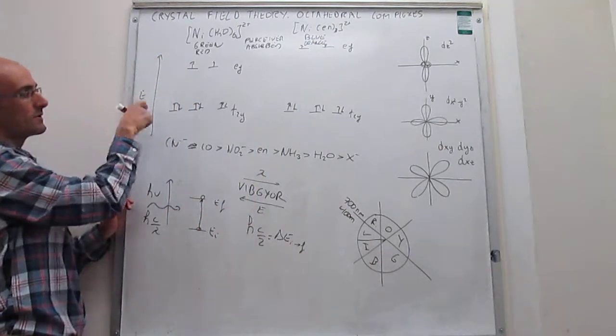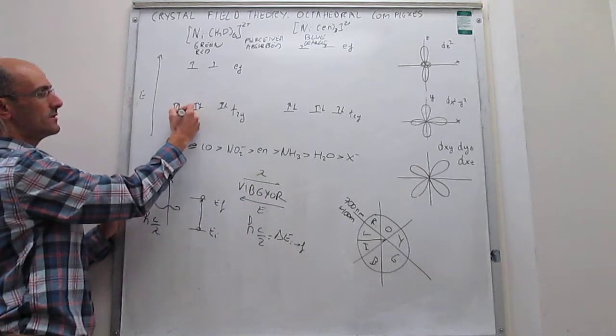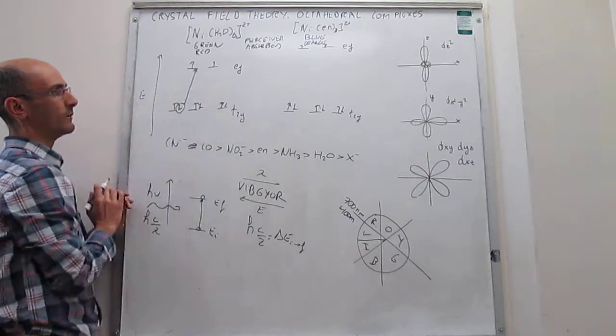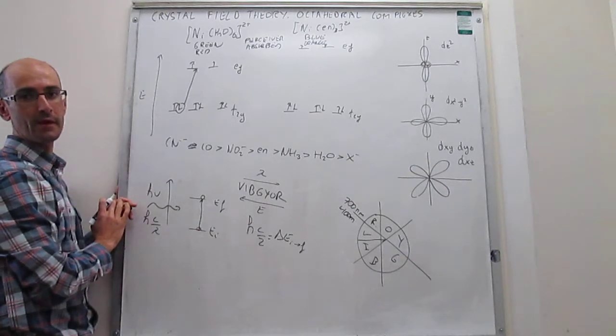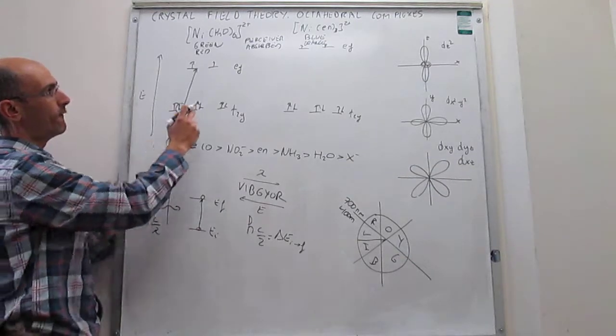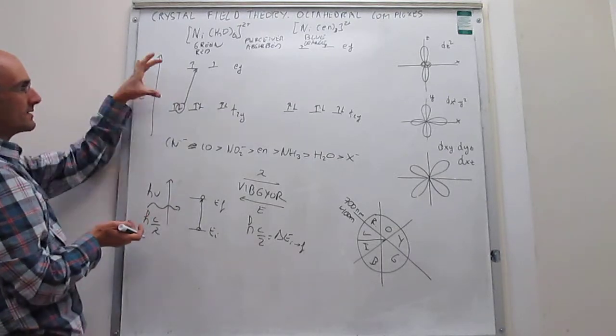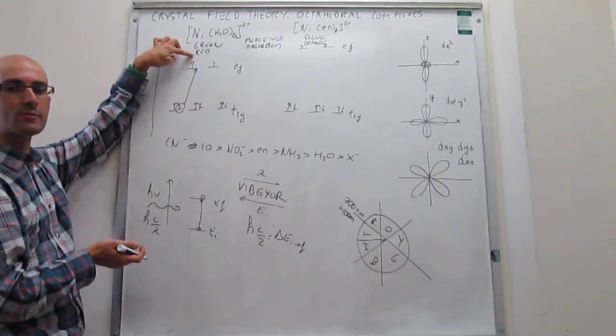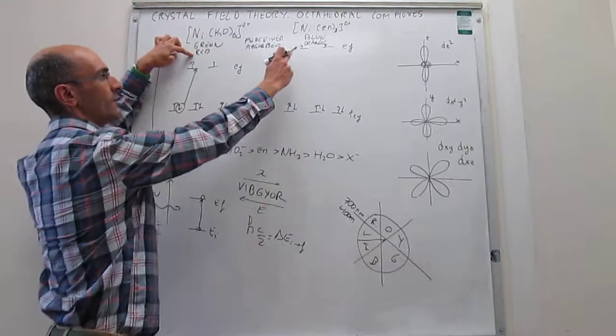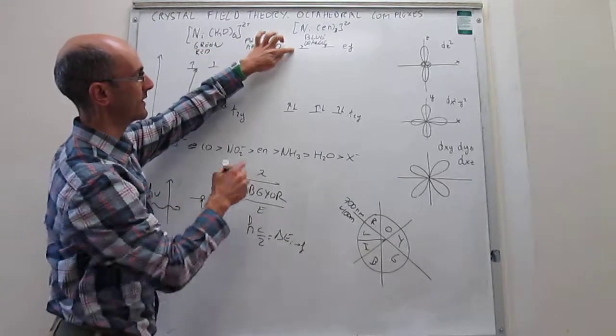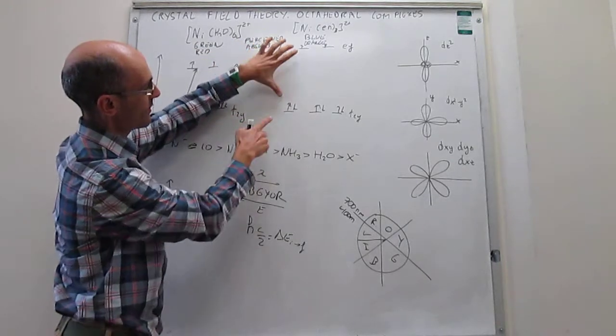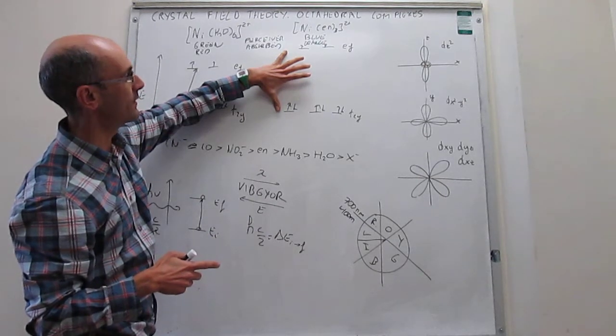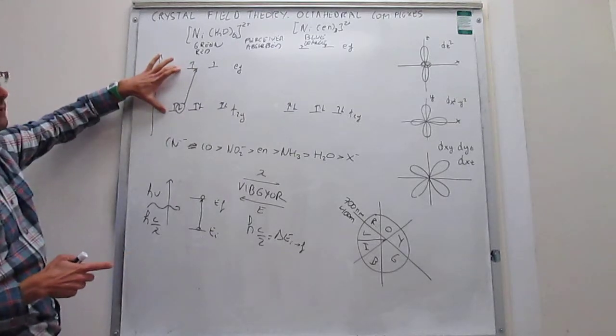The transitions when you shine photons are always from the t2g, which is fully occupied, into the eg. That electron would be promoted and that photon would be absorbed. Notice that for the hexa-aqua complex, because this gap is smaller, then the energy of the photon that is absorbed needs to be smaller than the energy of the photon absorbed in the tris-ethylenediamine complex.